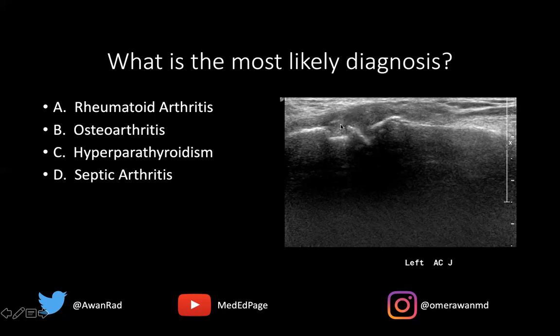We also have capsular hypertrophy. All this hypoechoic area around the joint capsule is hypertrophy of the AC joint capsule. So the best answer in this case would actually be osteoarthritis — this is a case of typical classic osteoarthritis in the acromioclavicular joint.